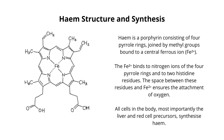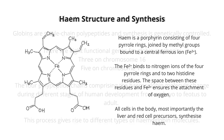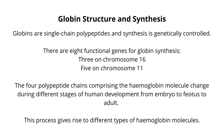All cells in the body, most importantly the liver and red cell precursors, synthesize heme. Globins are single-chain polypeptides and their synthesis is genetically controlled. There are eight functional genes for globin synthesis: three on chromosome 16 and five on chromosome 11.